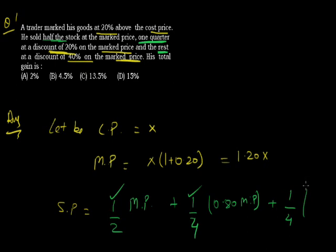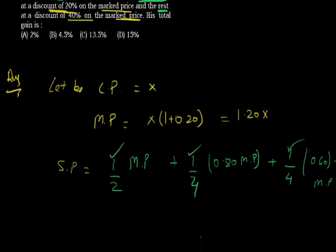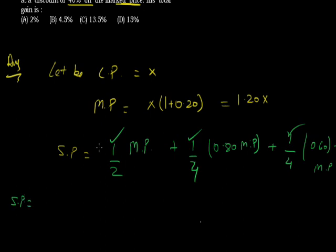This is very important: whenever a discount is given, we consider how much we are left with. Discount is 40%, so we are left with 60%. Now total SP in terms of market price becomes: (1/2)M + (1/4)(0.80)M + (1/4)(0.60)M. Calculating this gives (1 + 0.40 + 0.30) / 2 = 0.85 of market price.